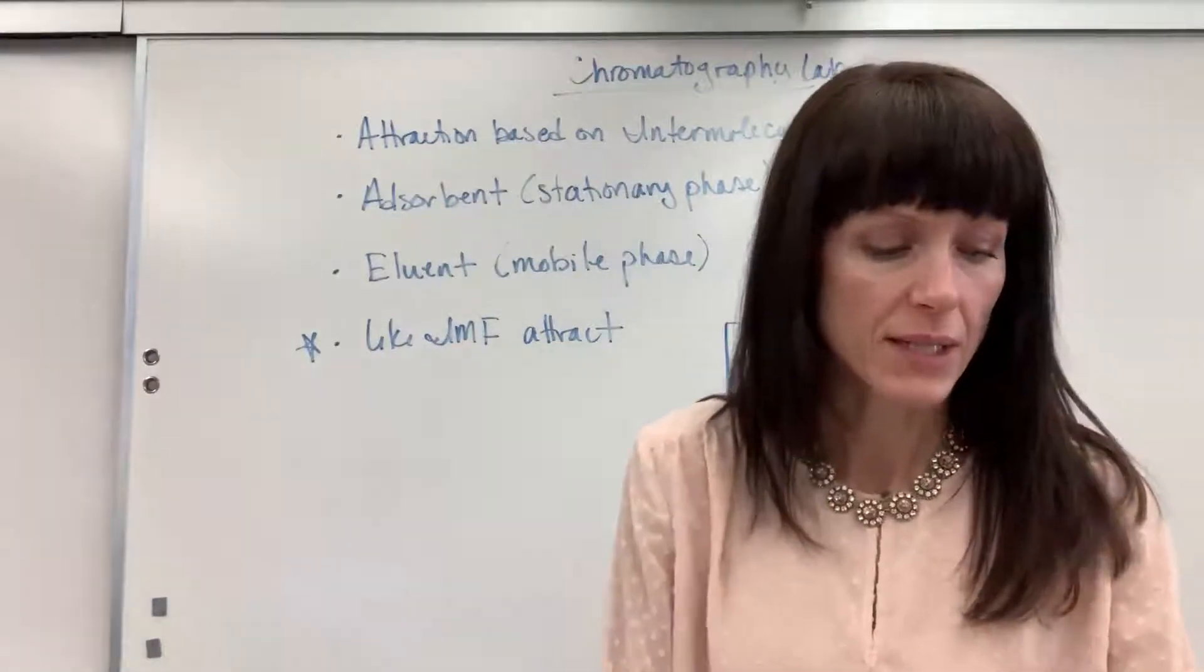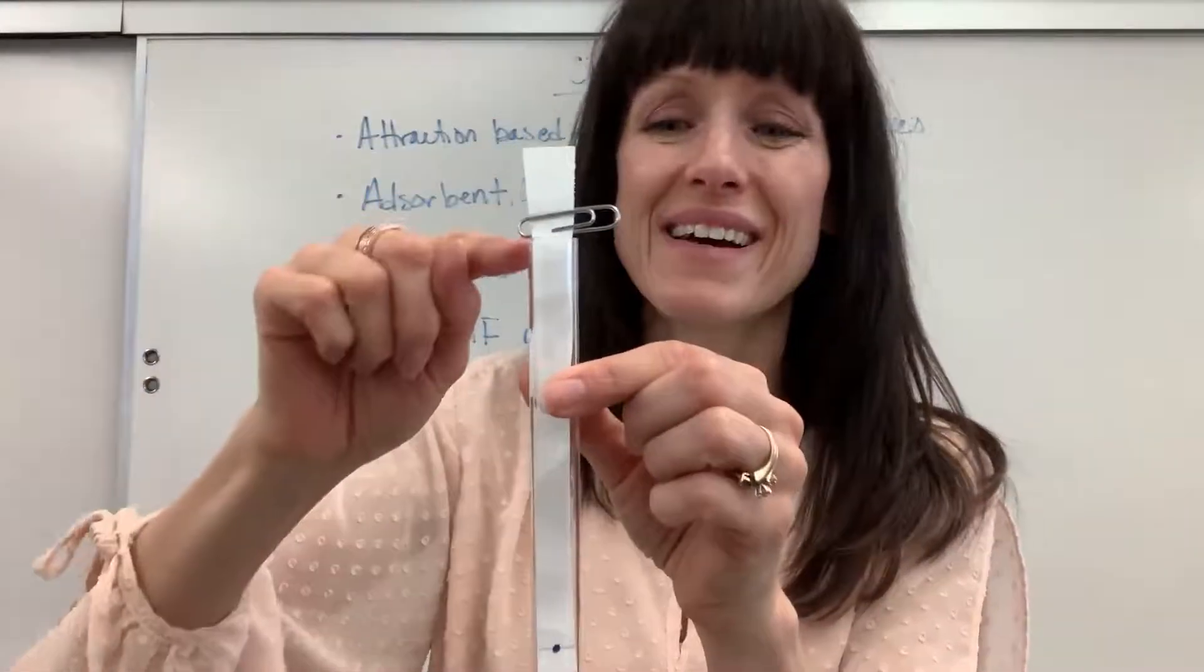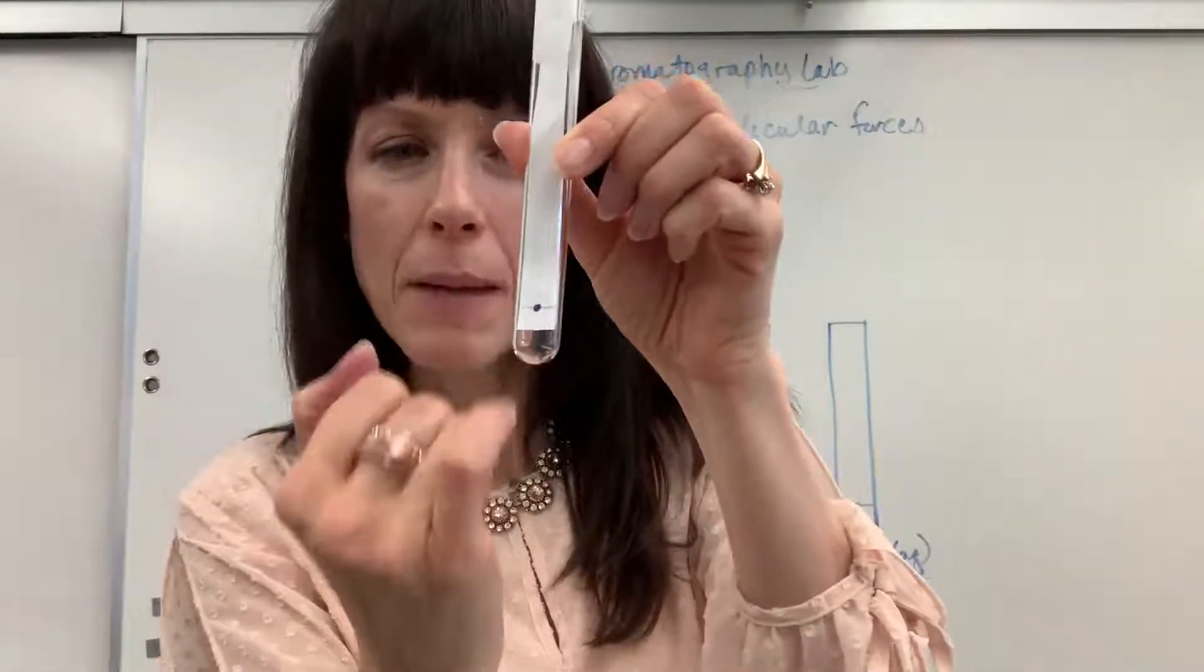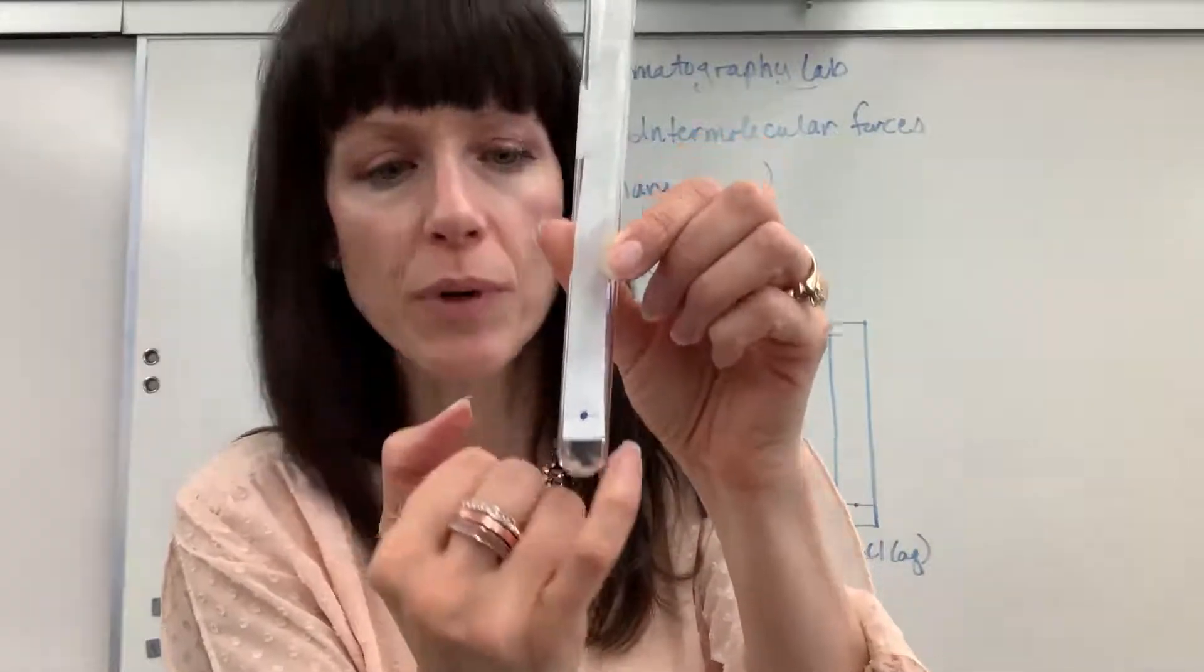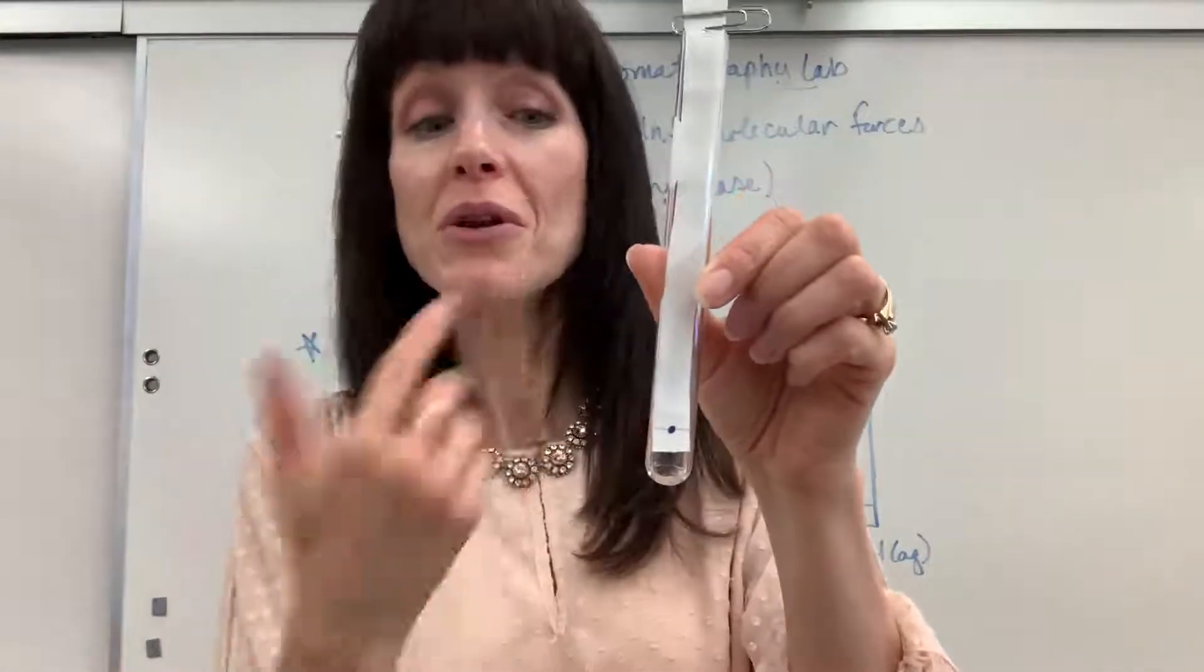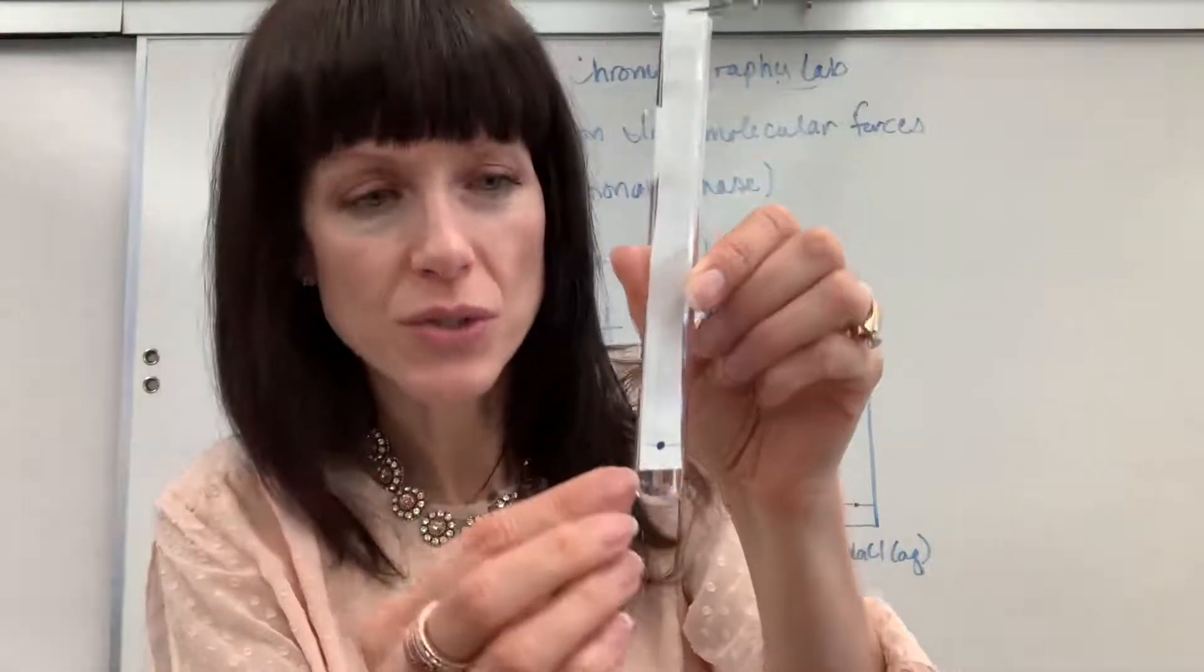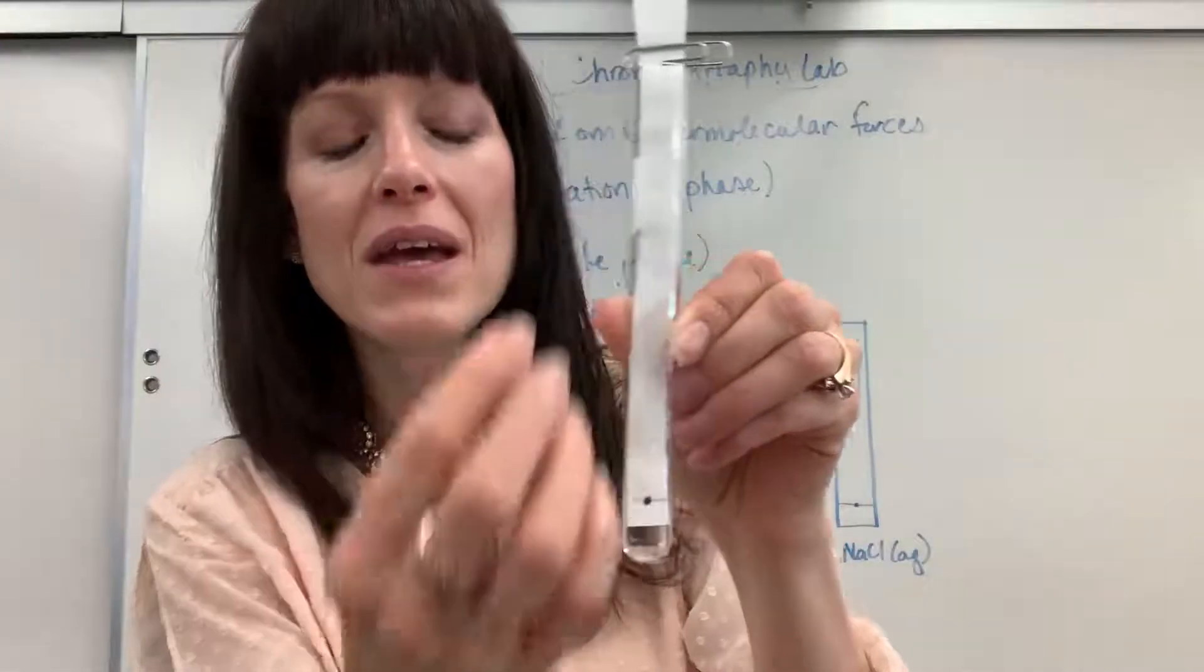So I would take a test tube, put my paper, my stationary phase, put this filter paper inside of here. I've already put the dot, and then the bottom of that paper just touches the mobile phase, the solution. So the isopropyl alcohol or the sodium chloride solution just barely touches it. And you know what happens, it's just like a paper towel. Through capillary action, that mobile phase, the solution, is going to absorb and move up that paper.